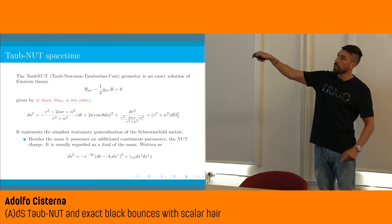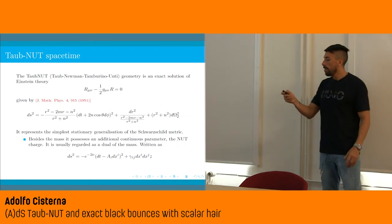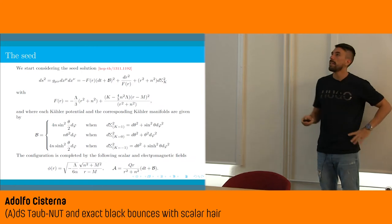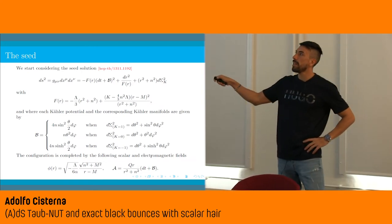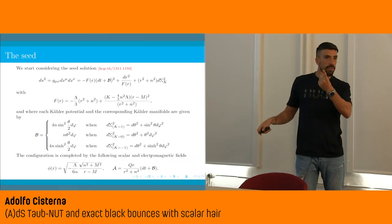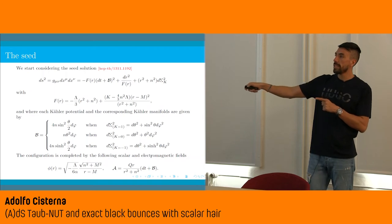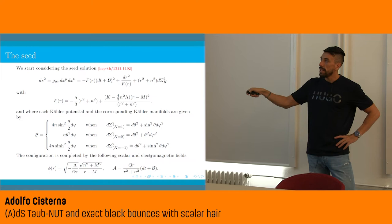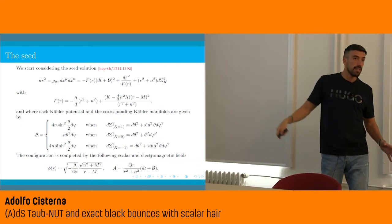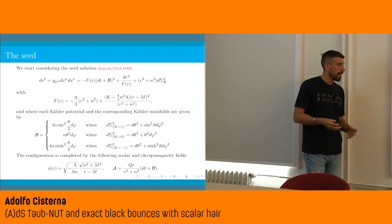They integrated the field equations and found that the metric function is given by a particular expression, while the scalar field is given by an expression pretty similar to the MTZ solution — because this is nothing else than the Taub-NUT extension of the MTZ black hole. The gauge field is also determined. Notice that always in the Taub-NUT spacetime, even if you have only electric charge and not magnetic charge, you always get a magnetic component in the gauge field.